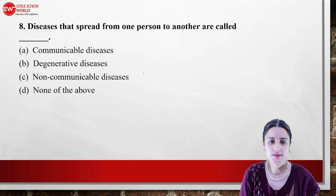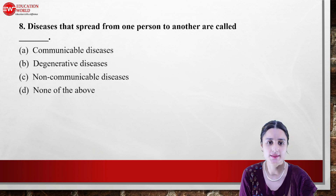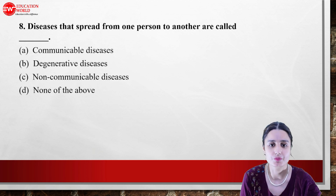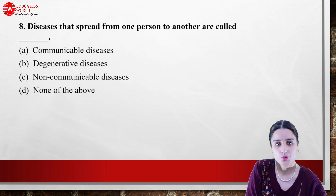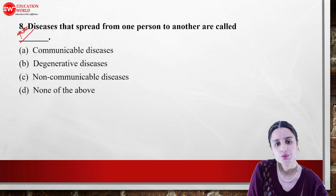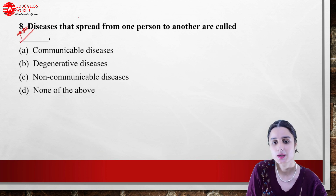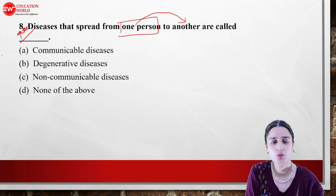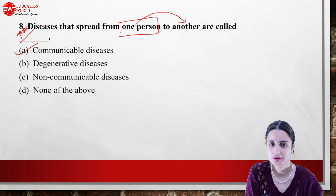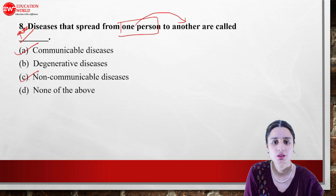Our next question: diseases that spread from one person to another — what are these diseases called? These are called communicable diseases. The opposite would be non-communicable diseases. Diseases which can be transmitted from one person to another are communicable diseases.